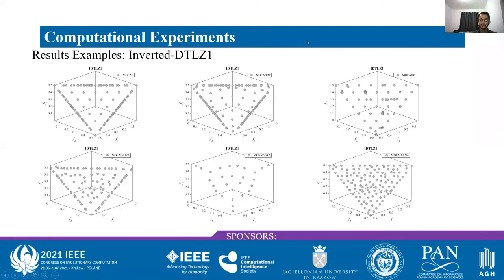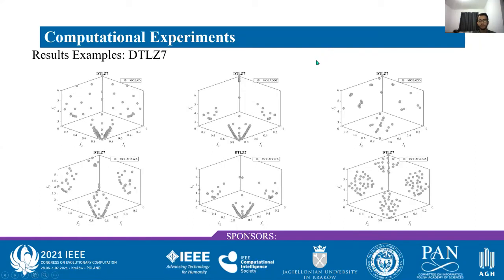I will show examples on the inverted DTLZ1 comparing MOEA/D-LNA against five other algorithms. The distribution of MOEA/D-LNA shows a well-distributed set of solutions, especially in the center of the Pareto front. Comparing the five algorithms against MOEA/D-LNA on the DTLZ7 problem, which has a disconnected Pareto front, MOEA/D-LNA found an interesting number of solutions in each part of the disconnected front with a more uniform distribution, particularly in the center of each disconnected region.